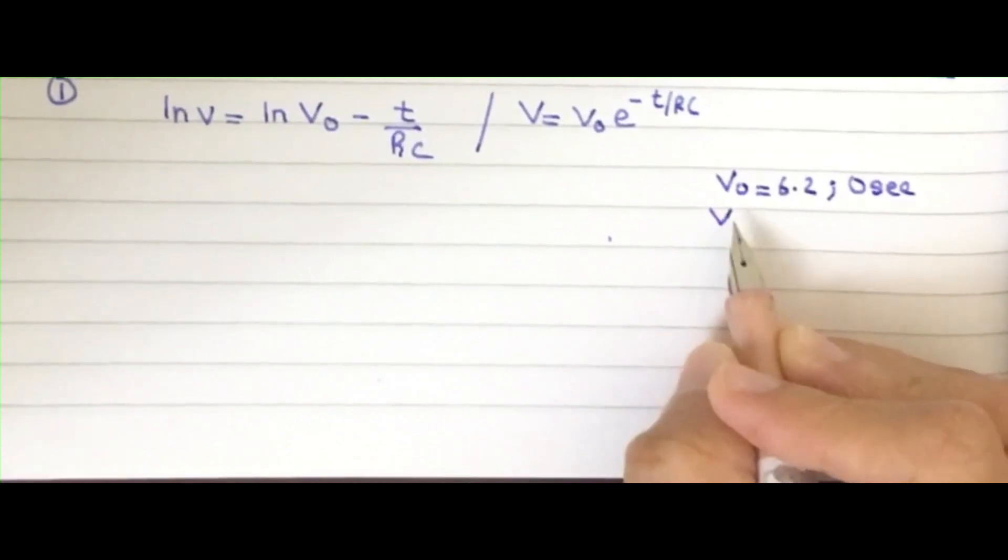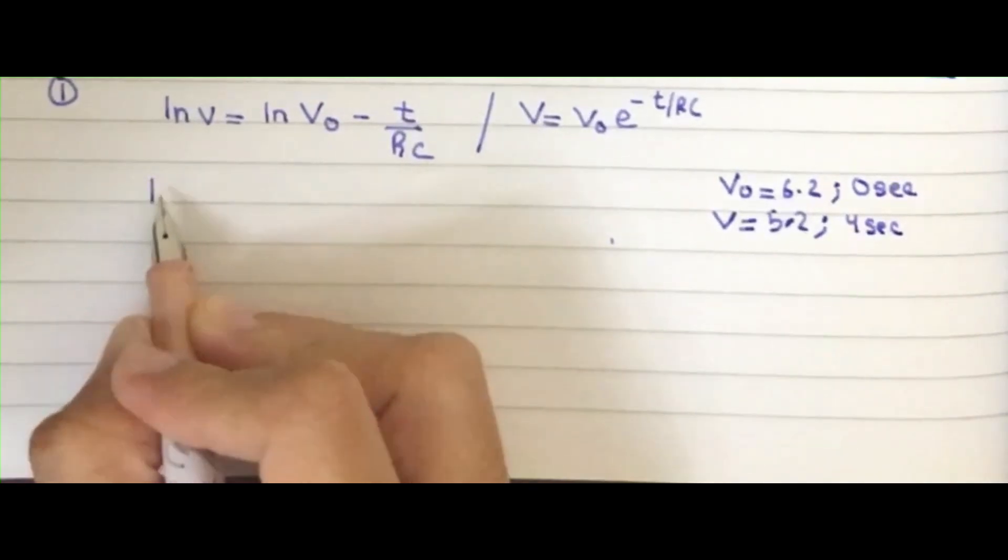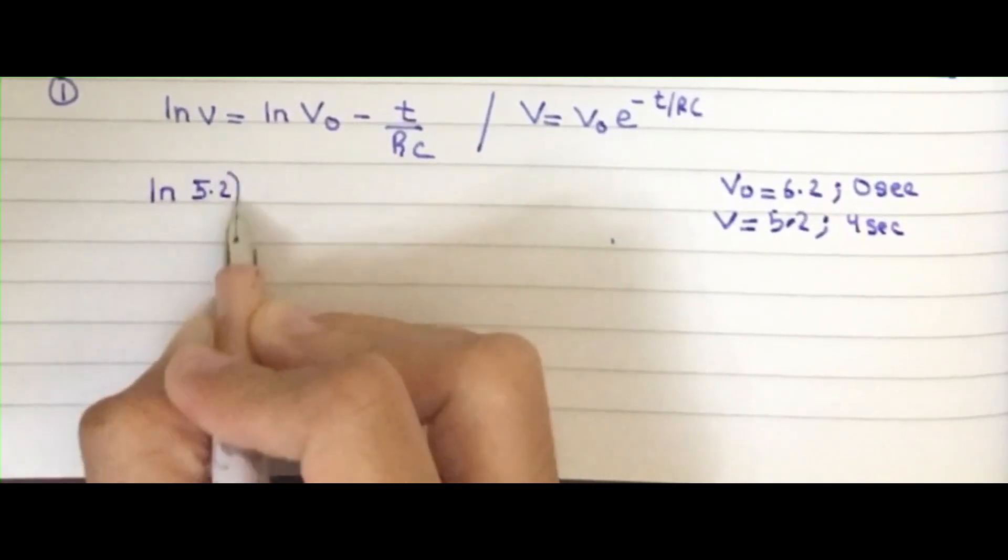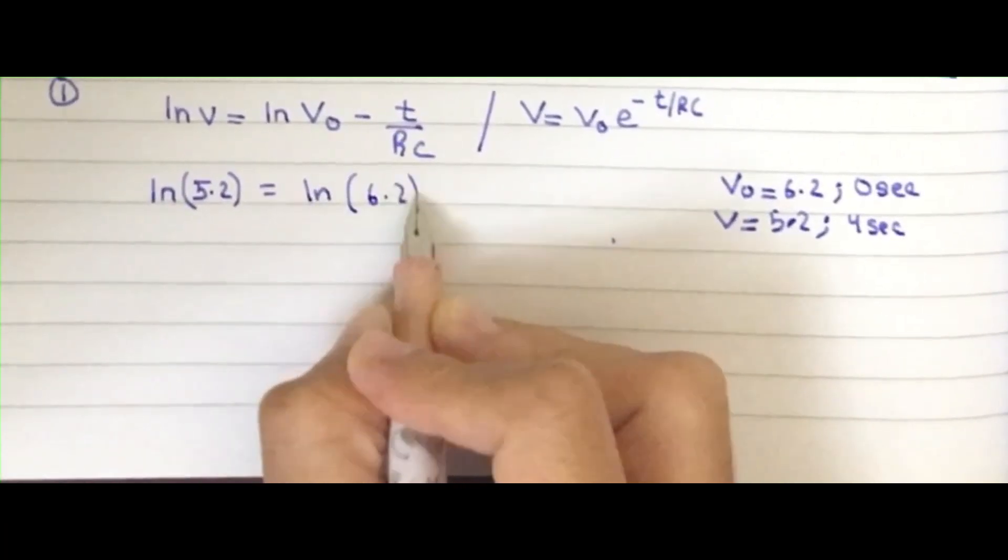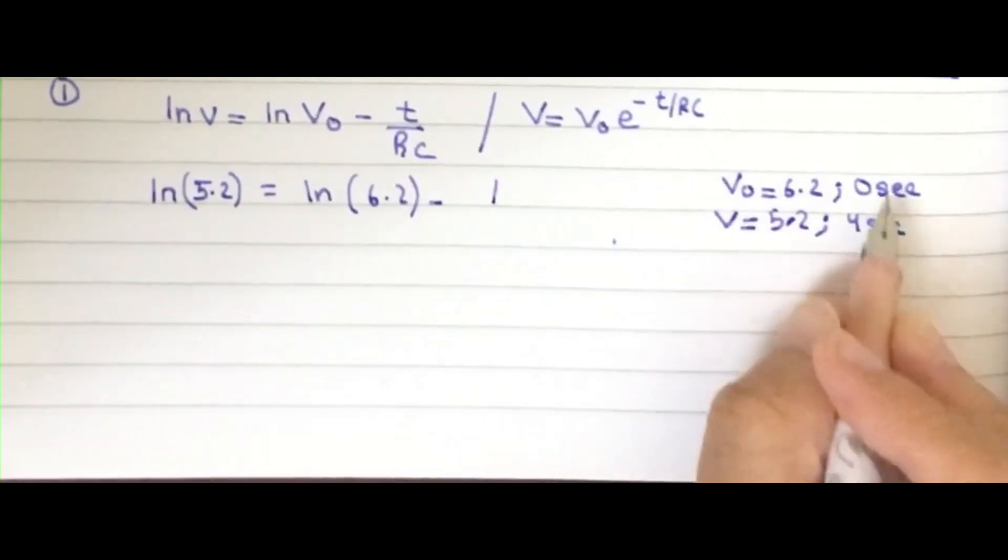I'm going to take a second pair. I'm going to take 5.2, and it has 4 seconds. So I have ln V which is 5.2, and then I have ln initial which is 6.2, and then I minus it with the time. Time is final minus initial, so I have 4 minus 0, which is 4.